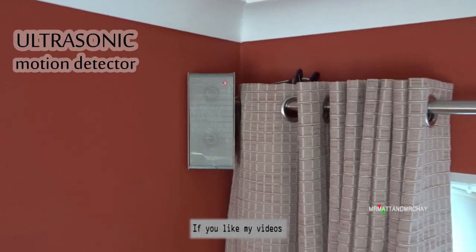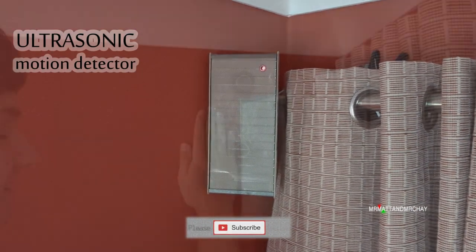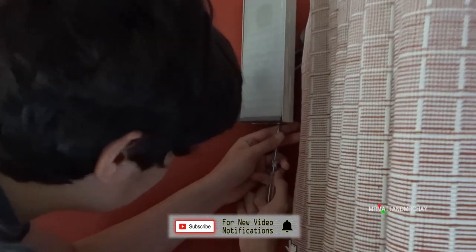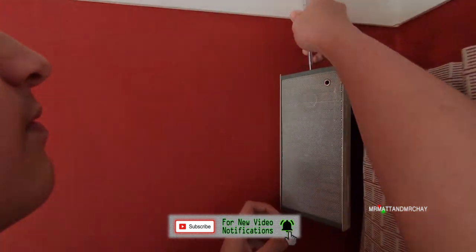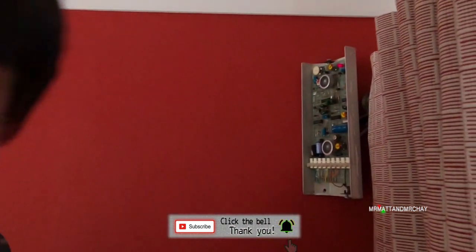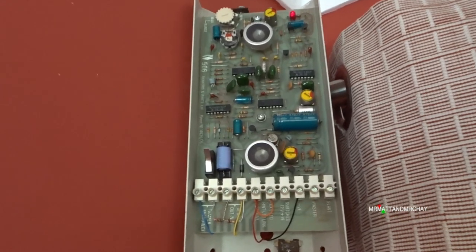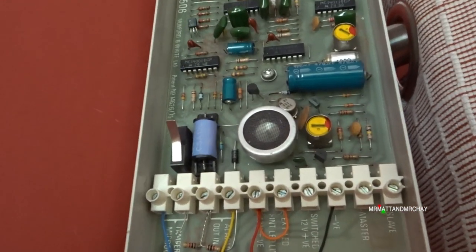Then came the ultrasonic motion detector. This is almost a speaker and microphone system. The speaker transmitted continuous ultrasonic sounds, inaudible to the human ear, and the microphone detected differences in the sound bouncing back to it from moving objects using the Doppler effect.